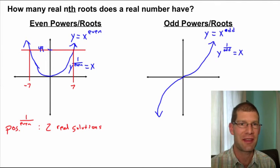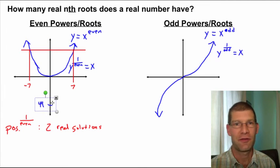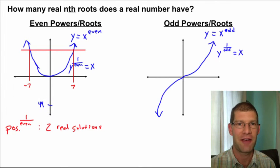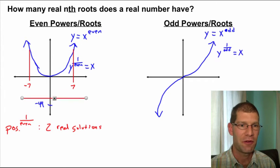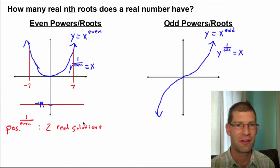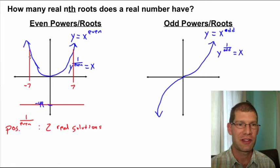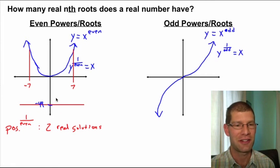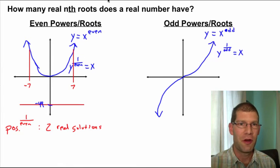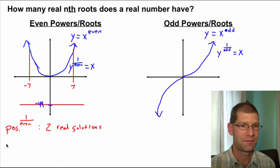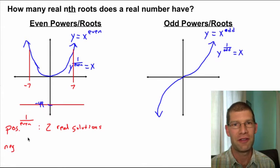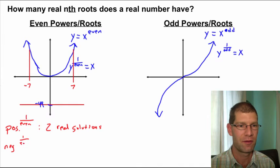If we take that same exact thing, and now say, well, does that work with negatives? If we had, instead of a 49 to the 1 half, a negative 49 to the 1 half. Well, if you survive chapter 6, you know that that's going to be giving you imaginary numbers. We don't have any real solutions. And, you can see that here with our graph. Because, we're looking at, well, where on my graph do I have a y value of negative 49? Well, nowhere does this curve ever hit a height of negative 49. So, then, we could go and write, if you have a negative to the 1 over even, or, if you have an even root of a negative number, then you have zero real solutions.